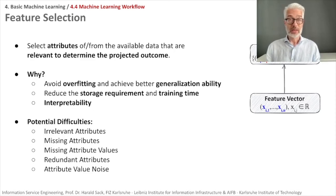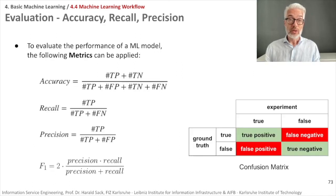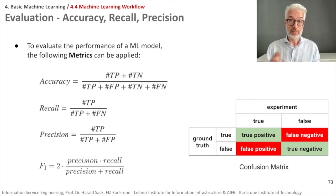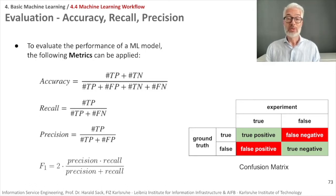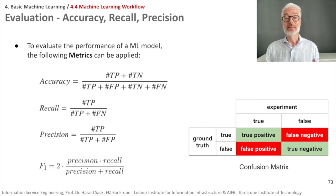Once we have achieved proper feature selection and trained our algorithm, we have to do a quantitative evaluation to find out how well it performs. For that we need evaluation measures. One is accuracy — the proportion of correct predictions, both true positives and true negatives, among the total number of cases examined. We also know precision, recall, and the F1 measure, which is the harmonic mean of precision and recall. Recall is the fraction of all correct answers that were found; precision is the fraction of what was found to be correct that is really correct.